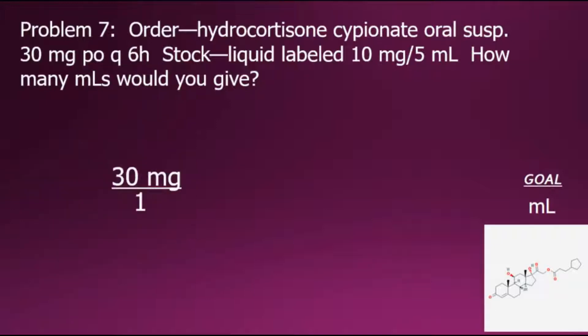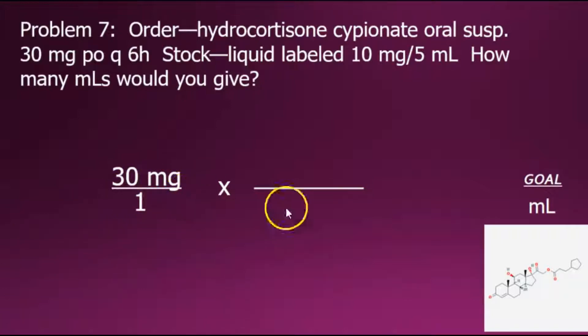Taking the doctor's orders and expressing it as a fraction will place a denominator of 1 for an equivalent value. Next, we will create a conversion factor fraction such that the current unit of milligram is canceled out. To do so, we will need milligrams in the denominator.